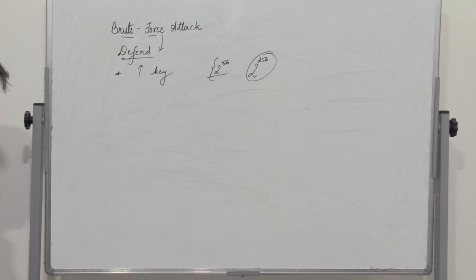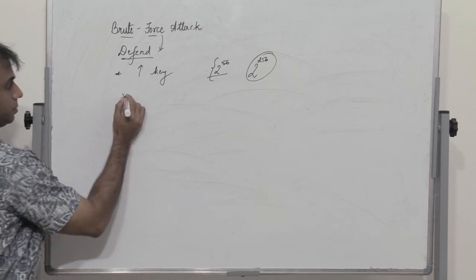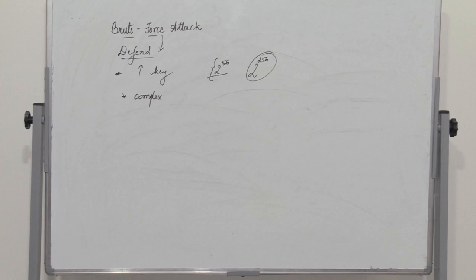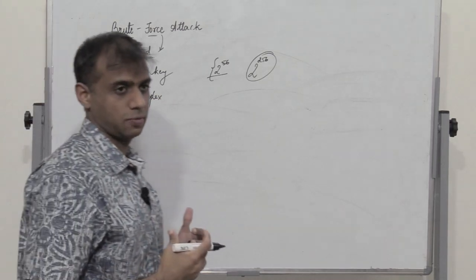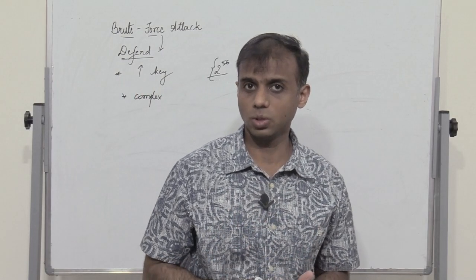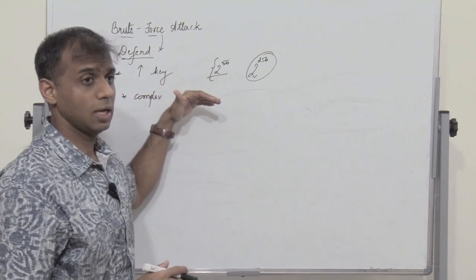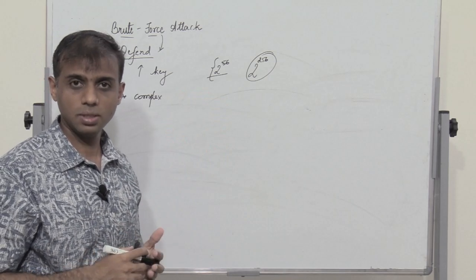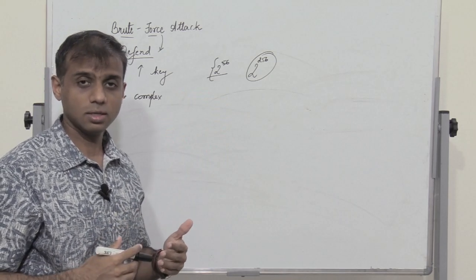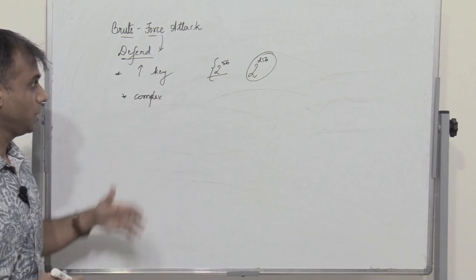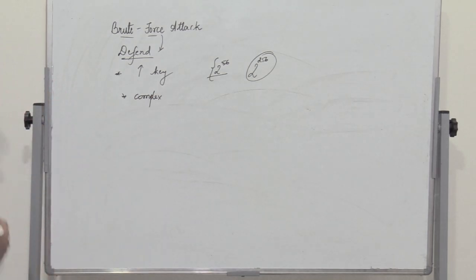The second way is to make the password more and more complex — to have a complex password or a complex key. This can be done by giving more options for a given password. When you give a password, it need not be just numbers; you can also have characters. By including numbers, uppercase and lowercase characters as part of the password, the password becomes more complex. Essentially, we are trying to increase the number of possible combinations, making it more and more difficult for the brute force attacker to identify the right password.